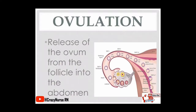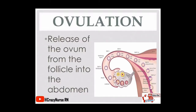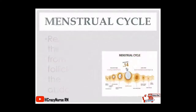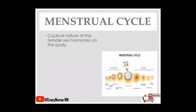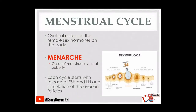Now let's proceed to ovulation. Ovulation is the release of the ovum, or the egg, from the follicle into the abdomen for implantation. The menstrual cycle is the cyclical nature of the female sex hormones on the body. Menarche means the onset of the menstrual cycle at puberty. Each cycle starts with the release of FSH, or follicle-stimulating hormone, and LH, or luteinizing hormone, and the stimulation of the ovarian follicles, which causes a menstrual cycle for women.